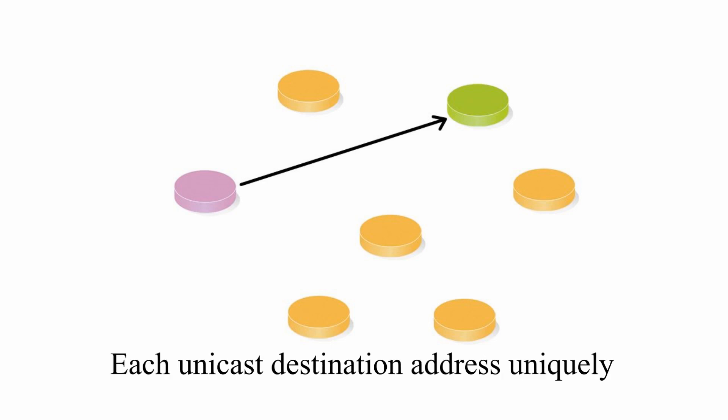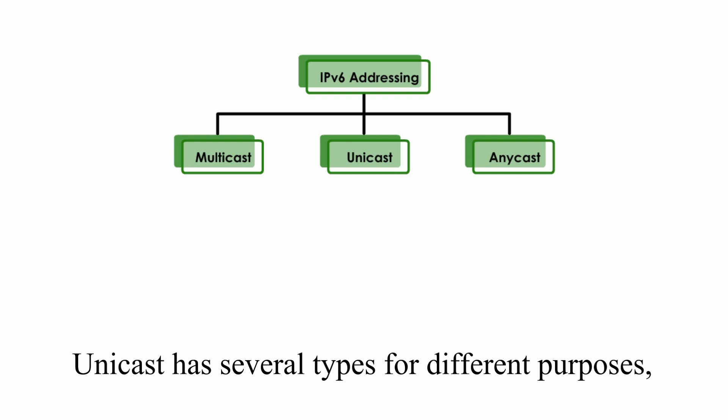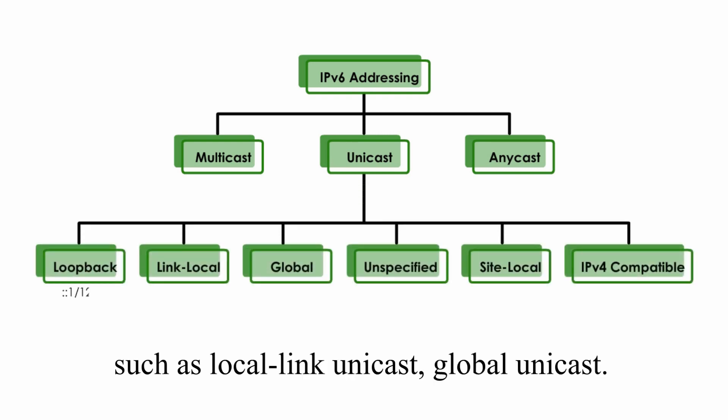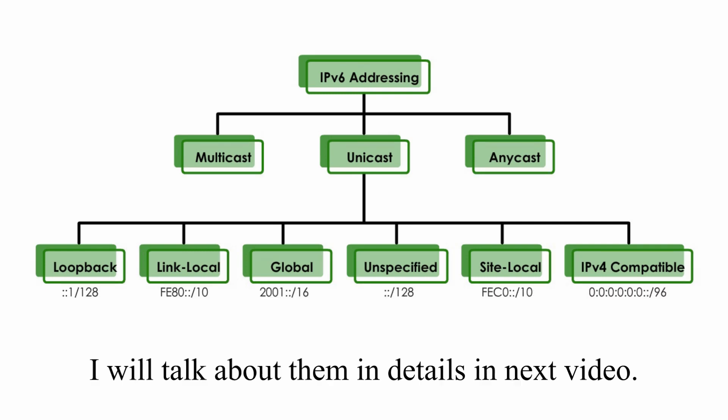Each unicast destination address uniquely identifies a single receiver on the network. Unicast has several types for different purposes, such as link-local unicast, global unicast, and several others. I will talk about them in detail in the next video.